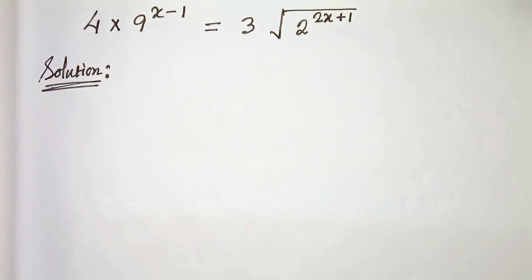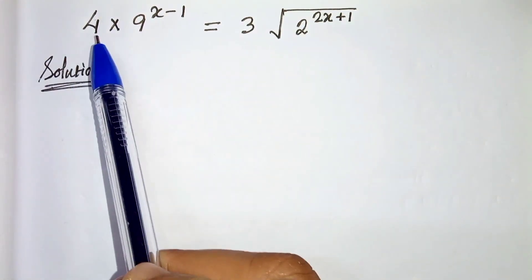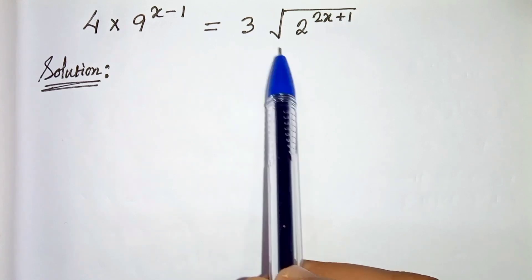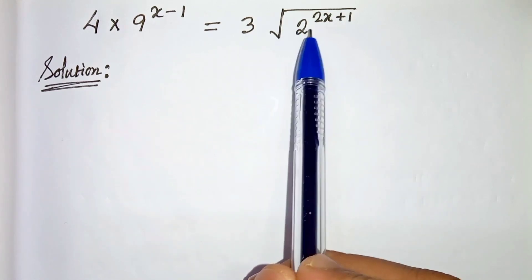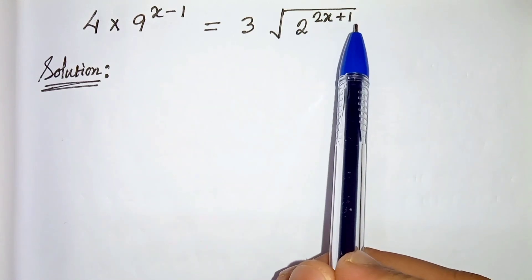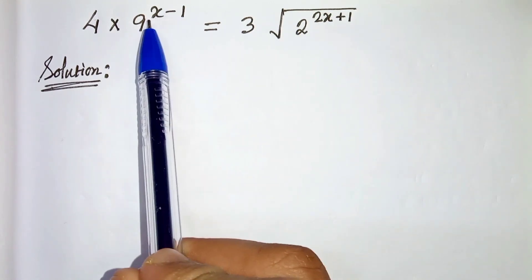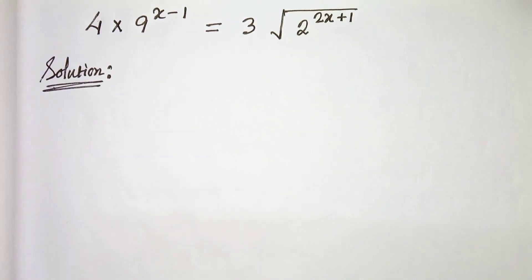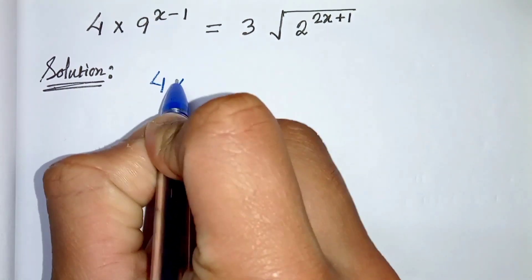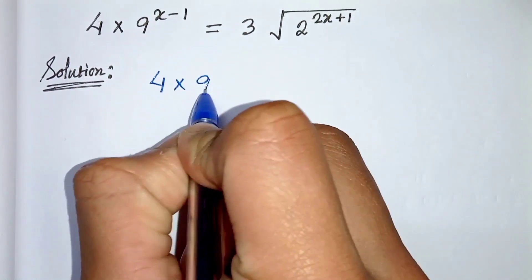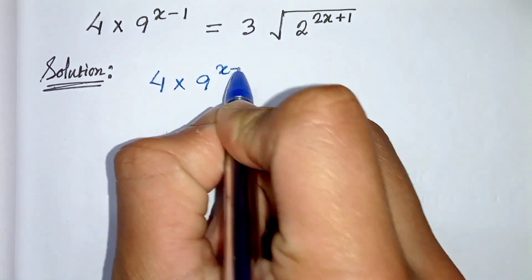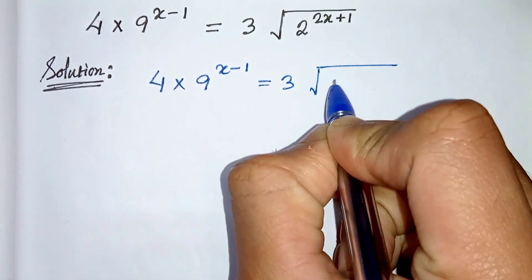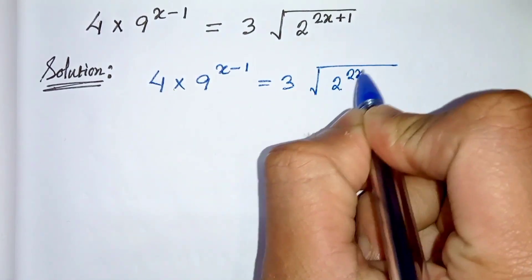Hello everyone. In this video we have 4 times 9 to the power x minus 1 equals 3 times root under 2 to the power 2x plus 1. We have to find the value of x. So let's start. We are given 4 times 9 to the power x minus 1 equals 3 root under 2 to the power 2x plus 1.